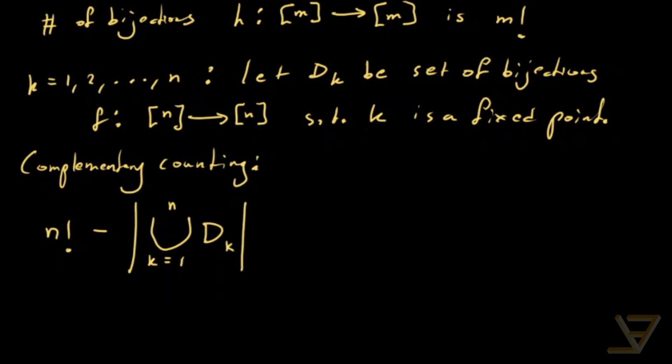And now it should be pretty clear why the principle of inclusion and exclusion is relevant. Because we can apply it to get that it's n factorial minus the sum iterating from k equals 1 through n, where the sum end is negative 1 to the k plus 1.